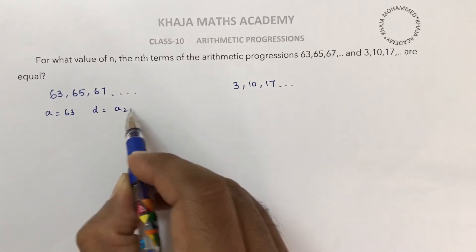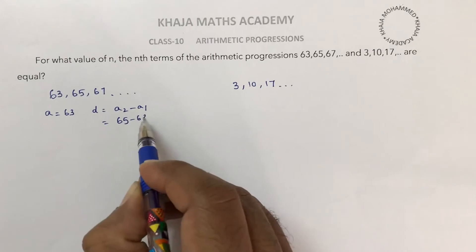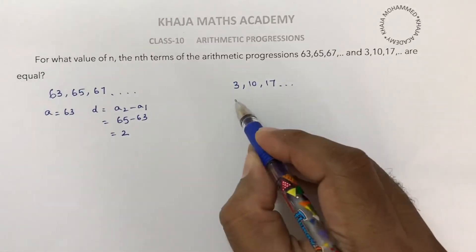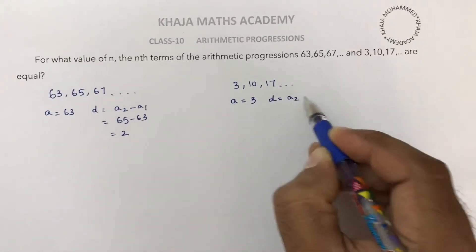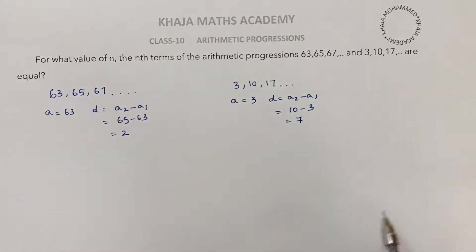difference is a2 minus a1, so 65 minus 63, that is 2. And here in this series, first term is 3 and common difference is a2 minus a1, so 10 minus 3, that is 7.